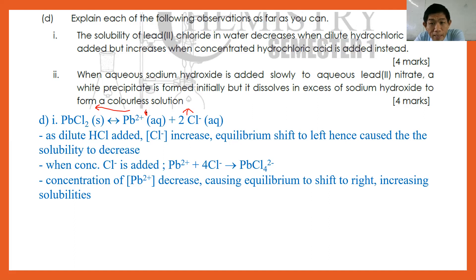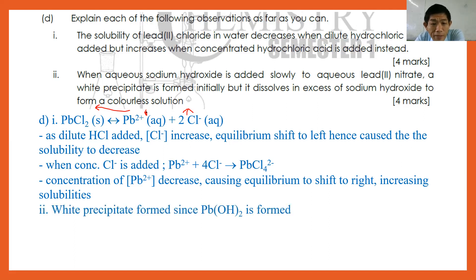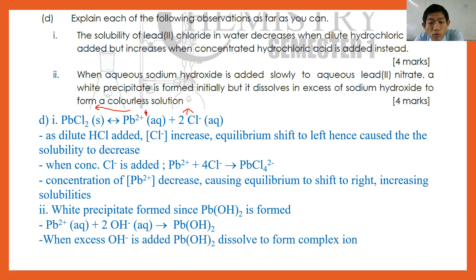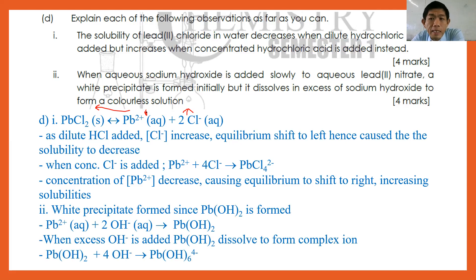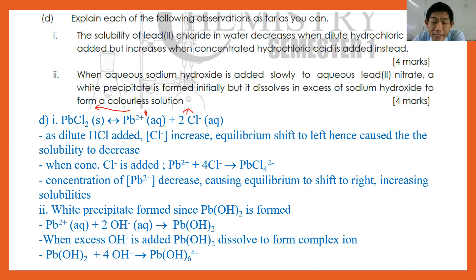Number two: aqueous sodium hydroxide is added slowly to lead(II) nitrate. A white precipitate forms initially but dissolves in excess sodium hydroxide to form a colourless solution. White precipitate forms because Pb(OH)2 is produced: Pb²⁺ + 2OH⁻ → Pb(OH)2. However, when excess OH⁻ is added, Pb(OH)2 dissolves to form a complex ion: Pb(OH)2 + 4OH⁻ → [Pb(OH)6]⁴⁻. This explains the form-4 observation that white precipitate dissolves in excess NaOH.